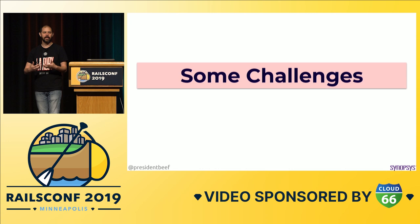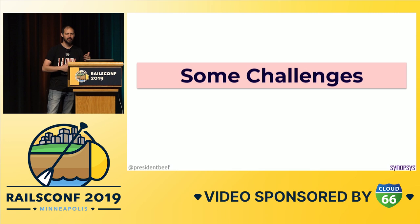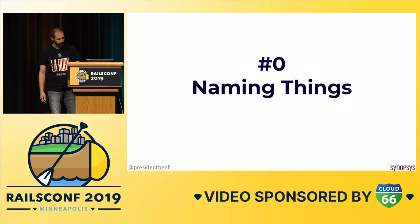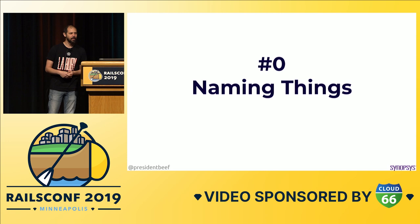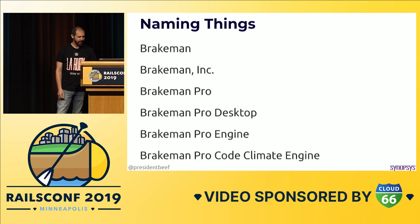Now let's talk about some challenges. I tried to focus on the challenges that arise from taking something that's open source and trying to build a company around it — and also kind of my personal challenges. I don't want to represent the other people in the company; these are things I struggled with. First and foremost: naming things. I think we're all aware naming things is hard, and I think I did a spectacular job.